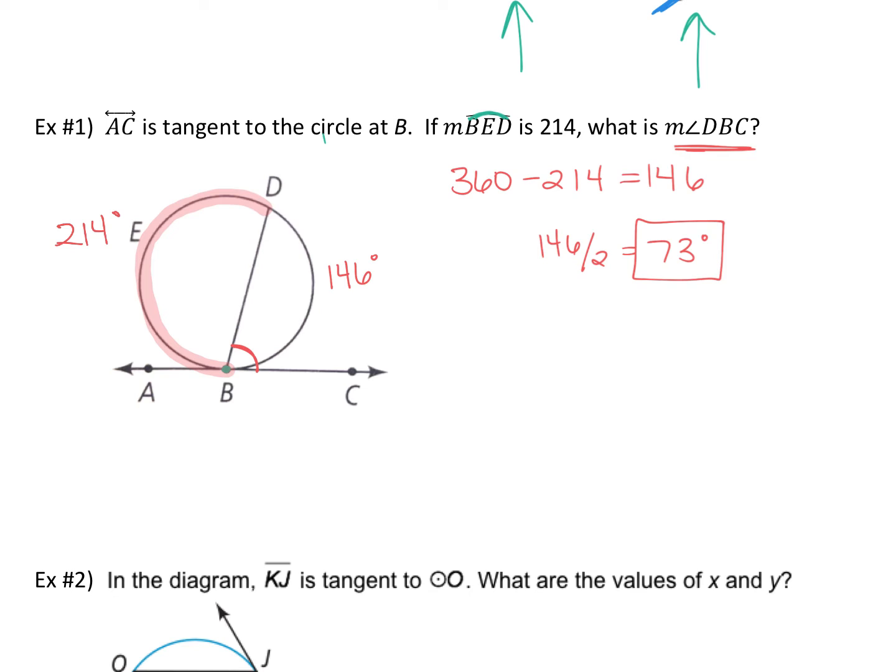Method number two is find this angle first. So if this is 214, 214 cut in half is 107. So this is 107 degrees and now this forms a straight line. So you're going to go 180 straight line minus 107 is 73 degrees. Notice I got to the same place, 73 degrees is our angle. It's just a matter of how you choose to get there.